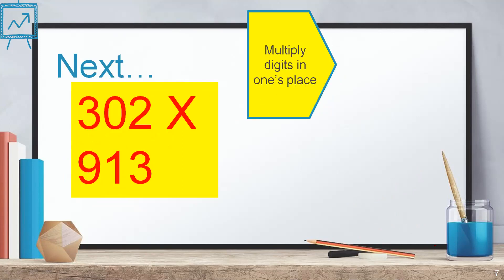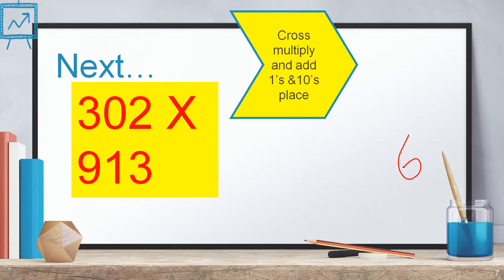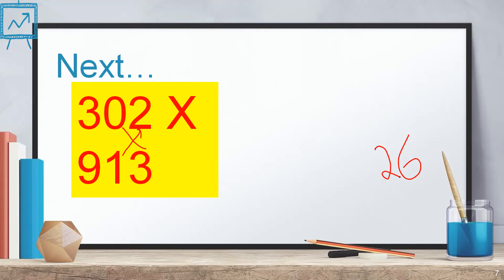First step is multiply the digits in 1s place. 2 3s are 6. Then cross-multiply 1s and 10s. 3 times 0 is 0 only. 2 times 1 is 2. So the next number is 2. Then multiply 1s and 100s and 10s and 10s means 3 times 3 and 9 times 2. 3 3s are 9. 9 2s are 18. 9 plus 18 is 27. So I'll be writing a 7 here and 2 as a carry.